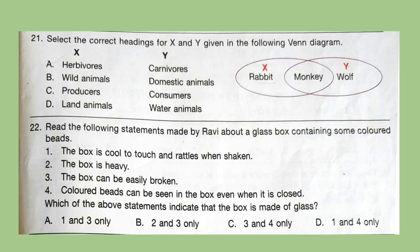Question 21: Select the correct headings for X and Y given in the following Venn diagram. Look at the Venn diagram and select your answer carefully. Correct answer is option A — X is herbivores and Y is carnivores. Question 22: Read the following statements made by Ravi about a glass box containing some colored beads. 1. The box is cool to touch and rattles when shaken. 2. The box is heavy. 3. The box can be easily broken. 4. Colored beads can be seen in the box even when it is closed. Which statements indicate the box is made of glass? Correct answer is option C — 3 and 4 only.